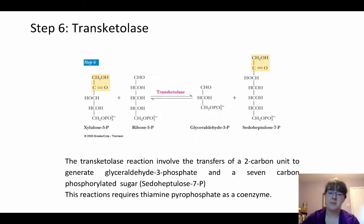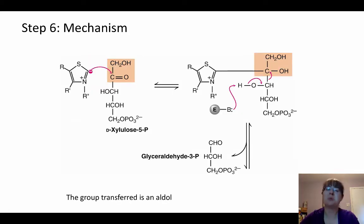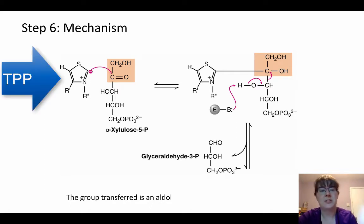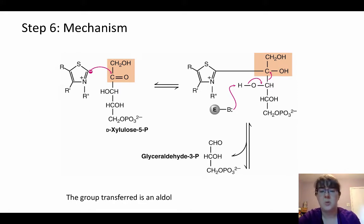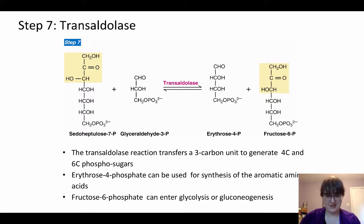This reaction requires thiamine pyrophosphate as a coenzyme — something to keep in mind because we often talk about coenzymes as important and then skip over when they're actually present. When looking at this mechanism, the thiamine pyrophosphate is what's going to do the original attack and will actually form a covalent bond temporarily to your substrate. Then the enzyme can do a little bit of acid-base chemistry to have that transfer happen. The next step is a transaldolase, which transfers a three-carbon unit to generate a four-carbon unit and a six-carbon unit.